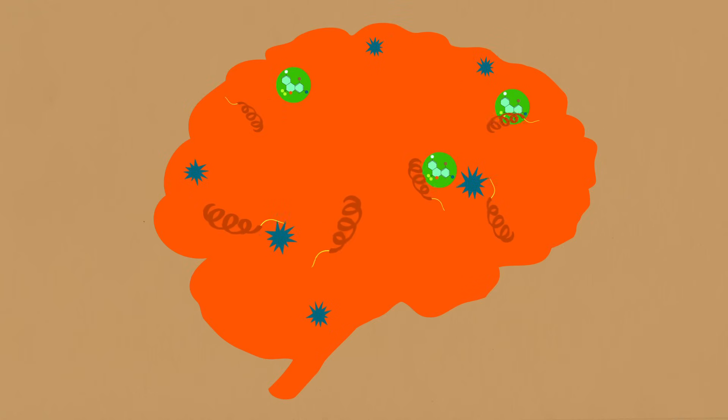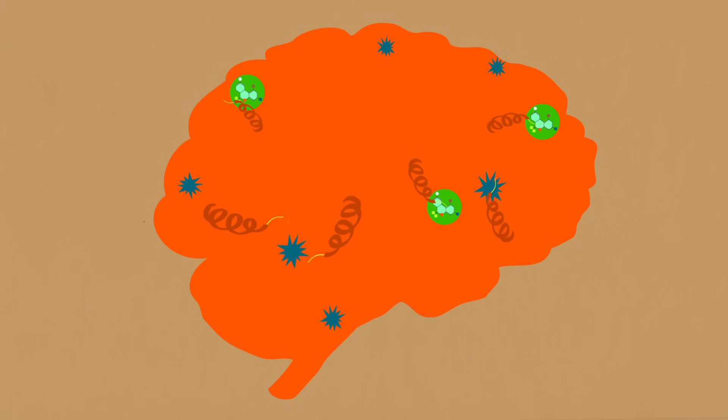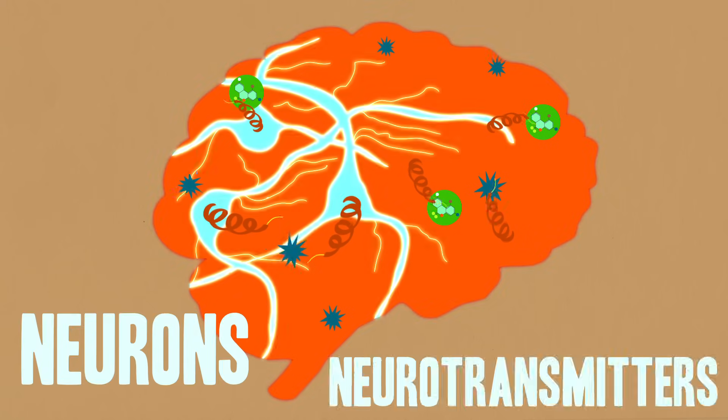Its effect stems from its ability to bind to receptors in your brain called cannabinoid receptors, and the reaction that takes place after that binding occurs. Now calling them cannabinoid receptors is kind of misleading, it makes it sound like they're designed to be stimulated by cannabis. They're not. They're receptors located on neurons, and they're activated by chemicals called neurotransmitters, which basically allow neurons to communicate with each other.